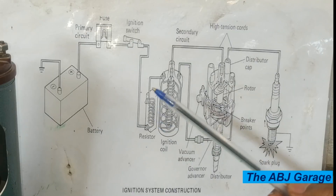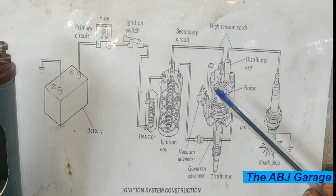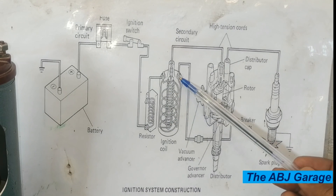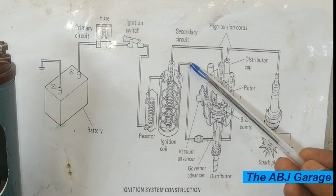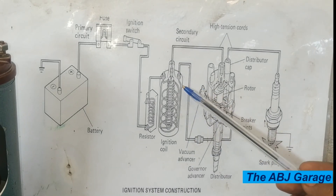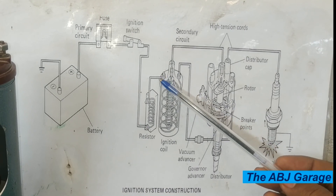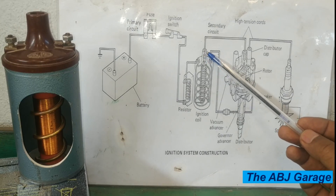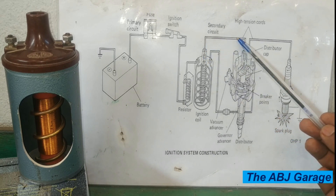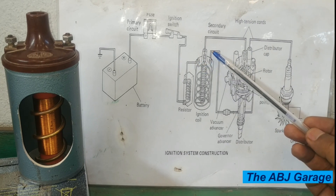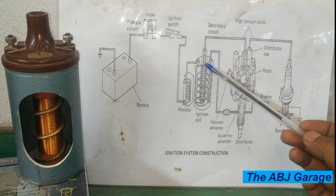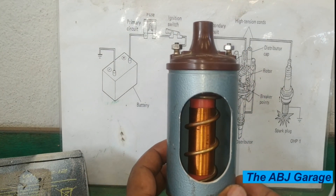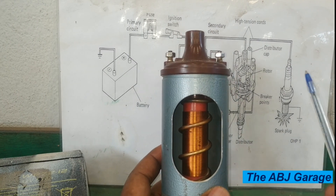Now let's go back to the ignition coil and see how it is constructed. As you can see on this diagram, the ignition coil is constructed from two windings. The primary winding is connected to ignition coil positive, winds through the coil, and exits through ignition coil negative, then goes to the distributor. The secondary winding begins at the ignition coil positive terminal, with multitudes of windings, and exits through the center terminal — sometimes known as terminal 4.